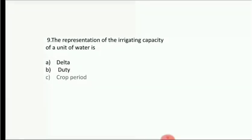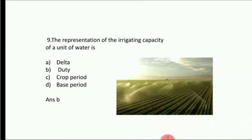The representation of the irrigation capacity of a unit of water — Option A: delta, Option B: duty, Option C: crop period, Option D: base period. Answer is Option B, duty. Duty means how many hectares of land can be irrigated by one cubic meter of water throughout the base period. Delta is the total depth of water required by the crop during its base period.